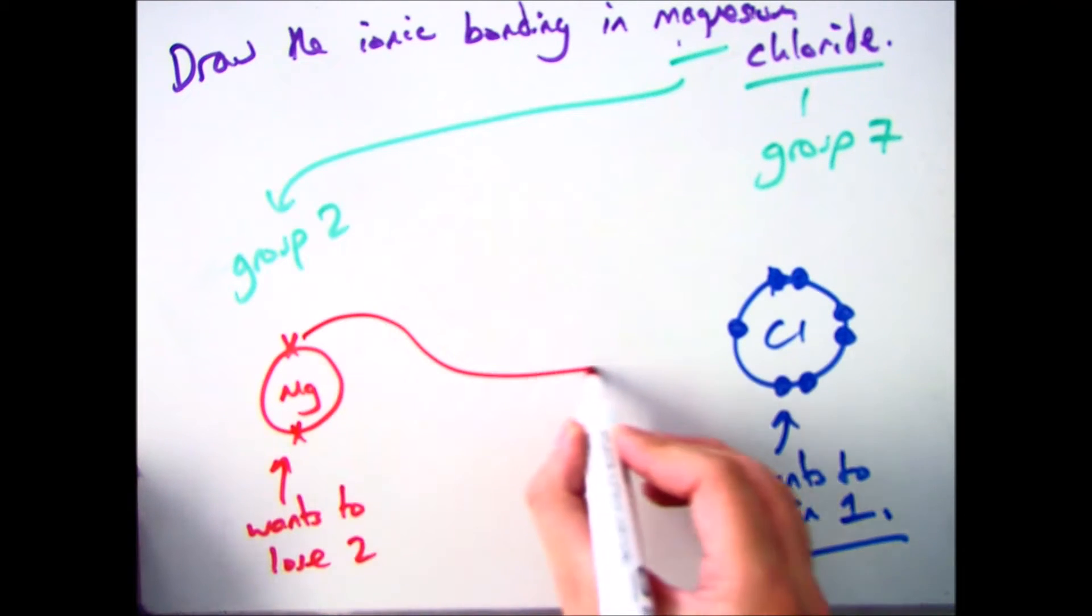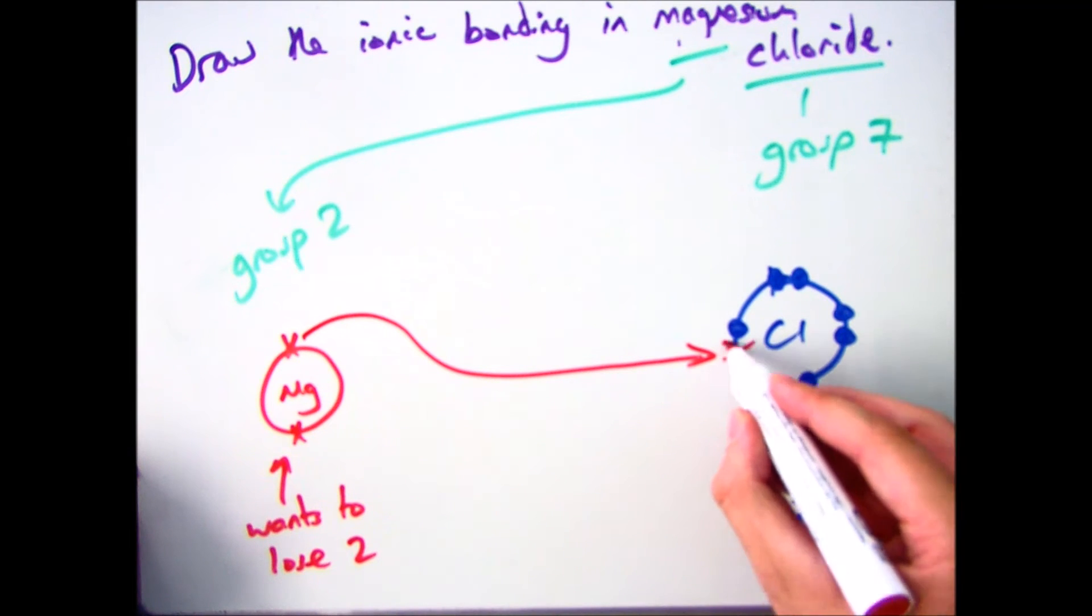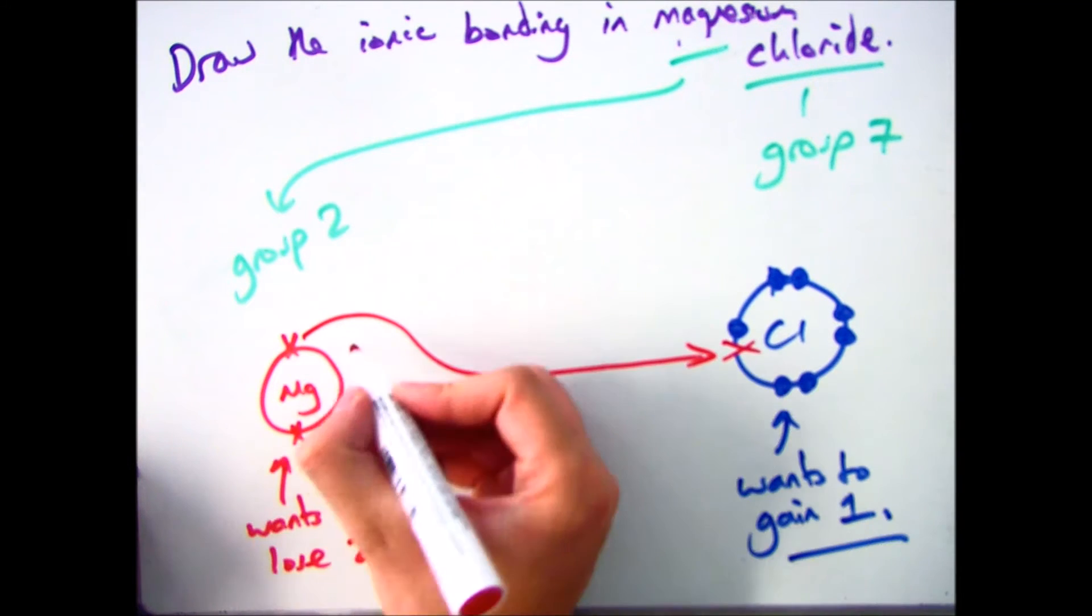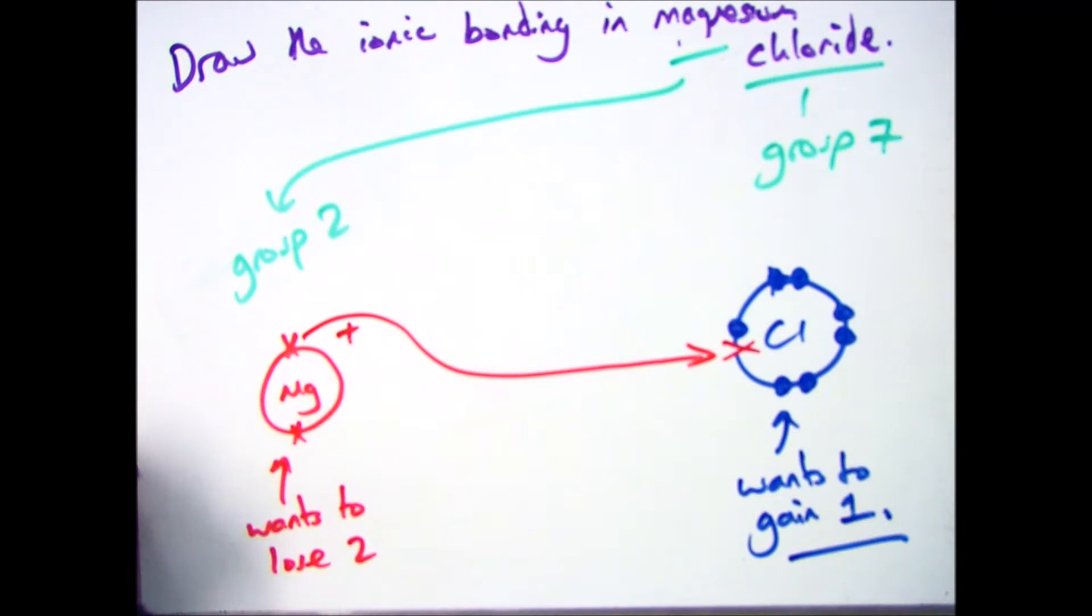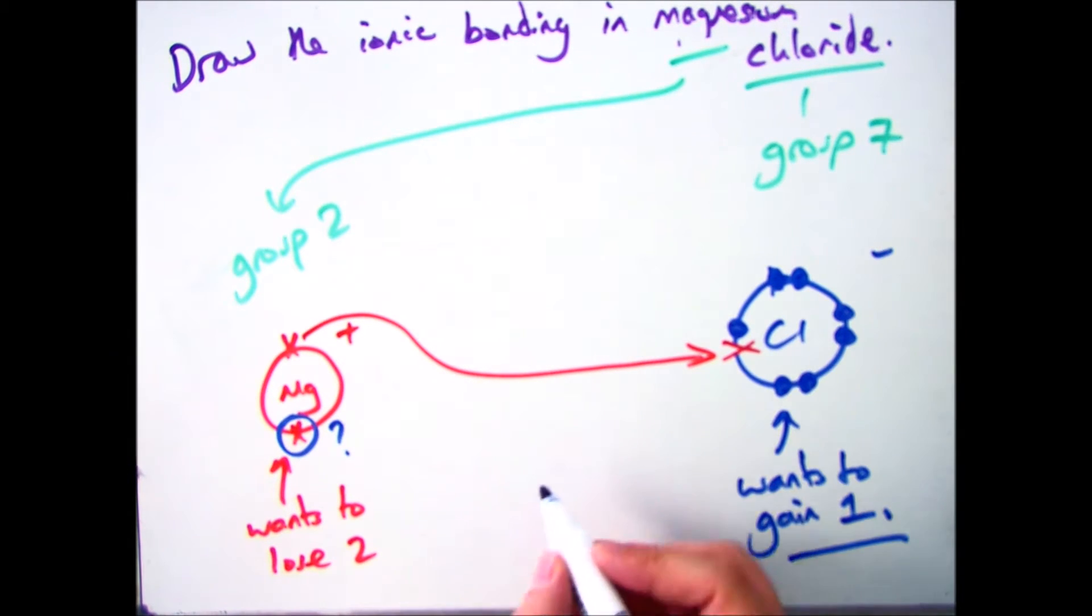Now, as we spoke about in the previous video, magnesium, the metal, will want to give its electrons to chlorine. So magnesium here is going to lose one electron and hand it over to chlorine. The issue there is chlorine has got a full outer shell, but magnesium doesn't. It's still got one left. So what do we need to do with that?